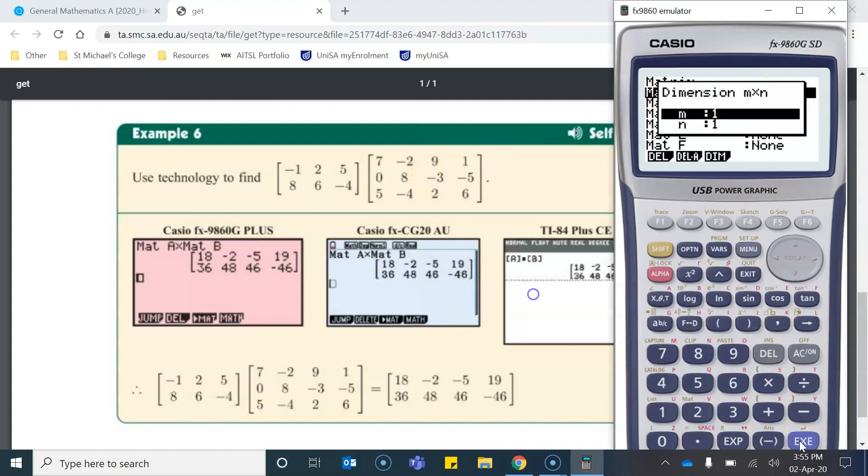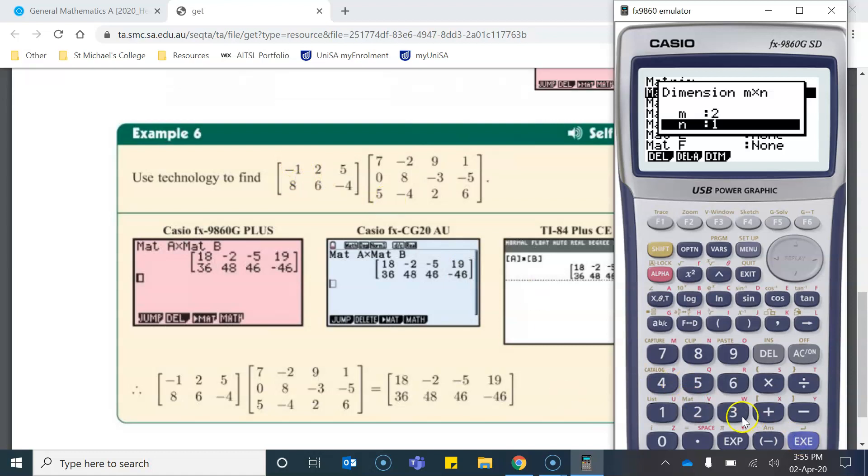Matrix A is dimensions or order 2 by 3. So I'll write 2, execute 3, execute. And now I can put in the values. So I have negative 1, 2, 5, 8, 6, negative 4. So I'll quickly put in those values.